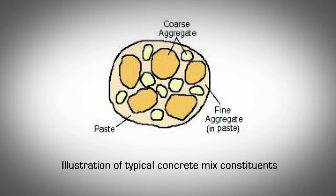Concrete fundamentals – Concrete composition. Concrete is a mixture of paste and aggregate. The paste binds the aggregate, sand and gravel or crushed stone into a rock-like mass. Cement paste is also known as binder. The paste is composed of cement, supplementary cementitious materials, water and purposely entrained air.